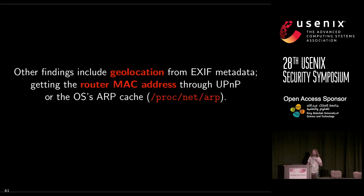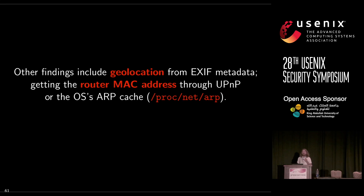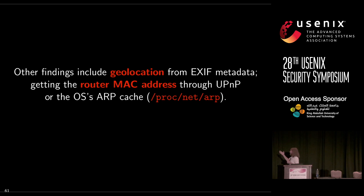Other findings from our paper: we found one app sending all of your EXIF metadata — including geolocation — this was the Shutterfly app. Another app was getting the router MAC address by connecting to 192.168.0.1 and asking for plug-and-play information. Another one was reading the OS's ARP cache by reading the file /proc/net/arp, where it could find the MAC address of the router, which is a surrogate for location.